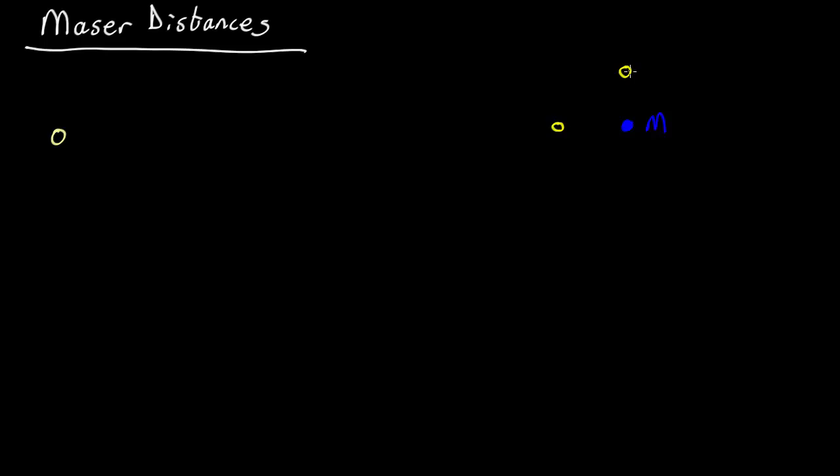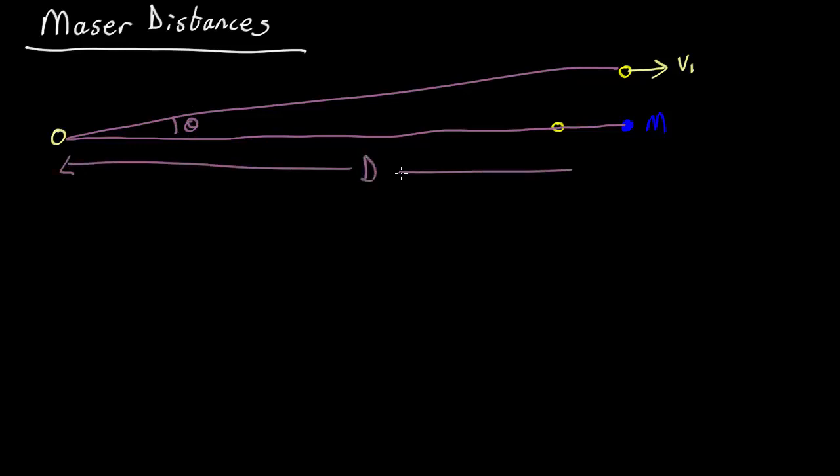Now what can we measure? Well, we can measure the velocity of this blob out here using the Doppler effect, so call that v1. We can't measure the distance from the black hole, but we can measure the angle. So let's draw an imaginary line along here and one up there, and we can measure that angle theta. What we want, of course, is the total distance here.